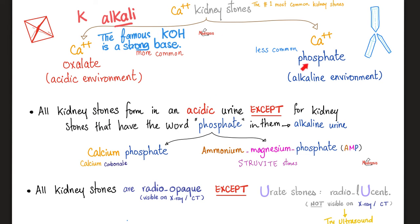Quick mnemonic: all kidney stones form when urine is acidic, except if the stone has the word 'phosphate' in the name — then it forms in alkaline urine. Example: calcium phosphate forms in alkaline urine. Ammonium magnesium phosphate also forms in alkaline urine. Calcium carbonate does not have the word phosphate, but it also occurs in alkaline urine.